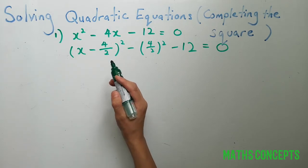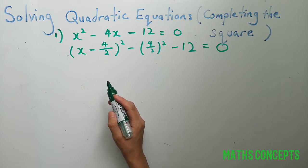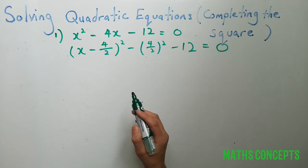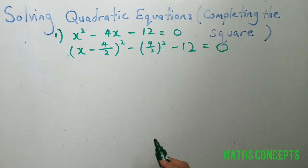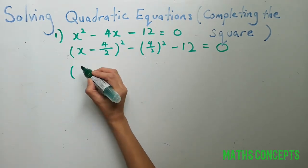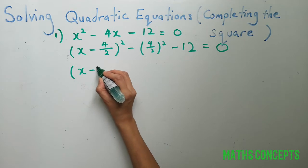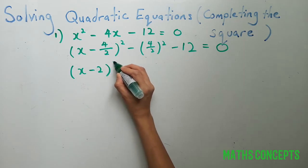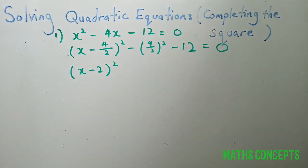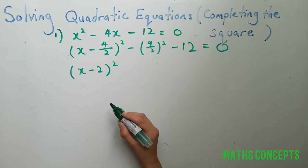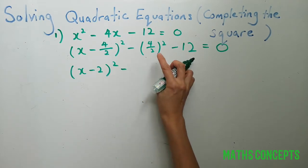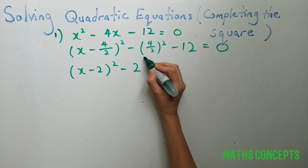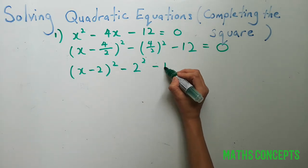Half the middle term so that you will get 4 over 2, and subtract back the middle term. Minus 12 will remain. So the next step we will get x minus 2 squared. You can see, so 4 divided by 2 you get 2, minus 4 divided by 2 here you get 2 squared, minus 12.